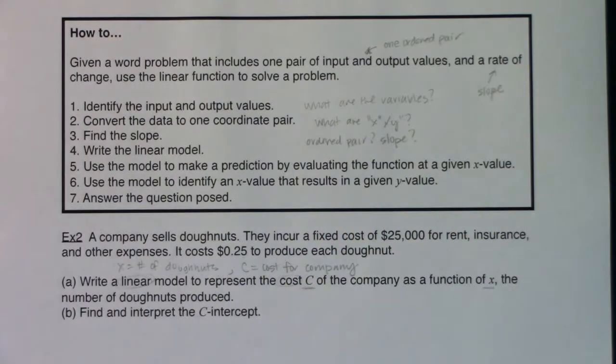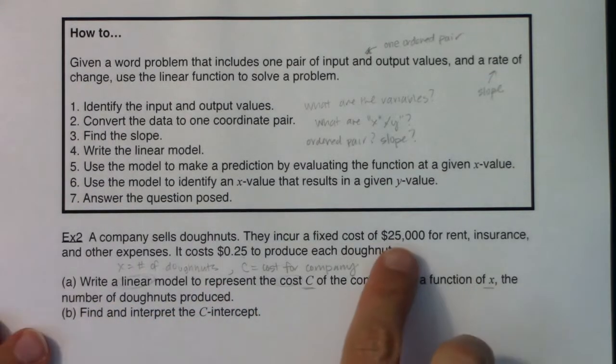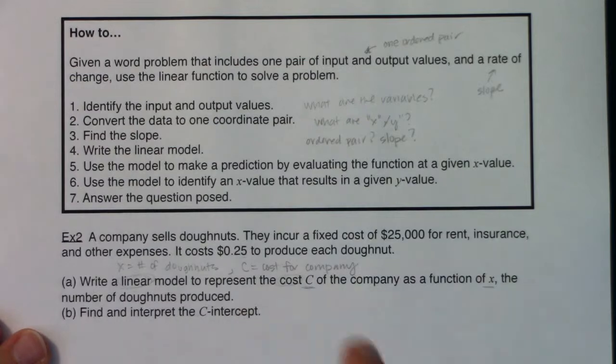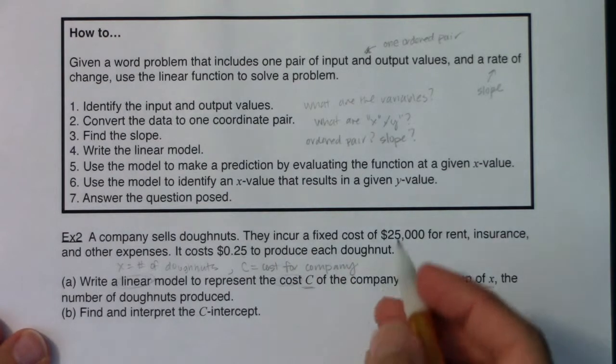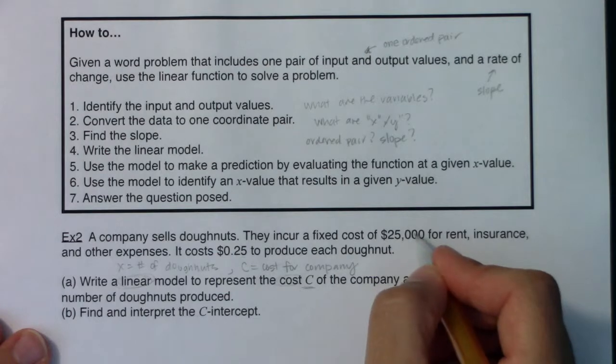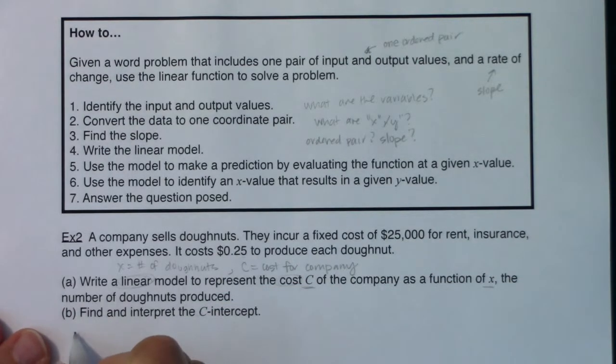So in terms of input and output values, I can see here that the company is going to cost $25,000 right up front. Before they ever make their first doughnut, they have to spend $25,000 just for rent, insurance, and other expenses. So I hear this as: I sell zero doughnuts, I'm still going to spend $25,000. So I hear an ordered pair in there: zero, $25,000.